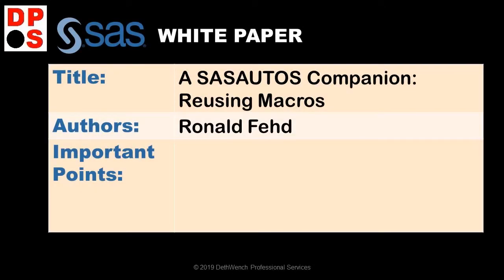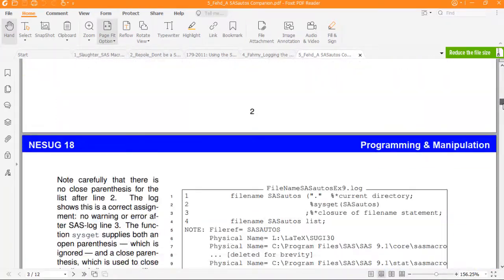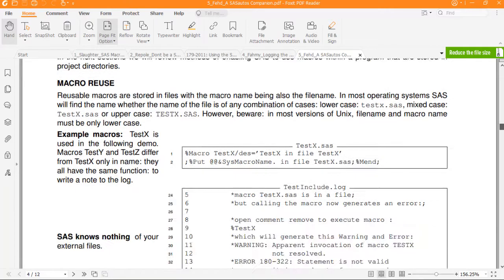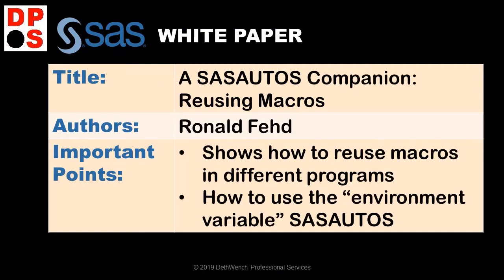My last white paper is called the SAS Autos Companion, and it's about reusing macros. I tend to reuse macros with the include statement, as I demonstrate in my videos and talk about in my book. This white paper does cover the include statement, but also covers other methods of reusing macros including the SAS Autos feature. It's best to try these things in a real data warehouse environment. If you are at a SAS data warehouse and want to do more with reusing macros, I encourage you to experiment with SAS Autos and see if you can improve the efficiency of your operation.